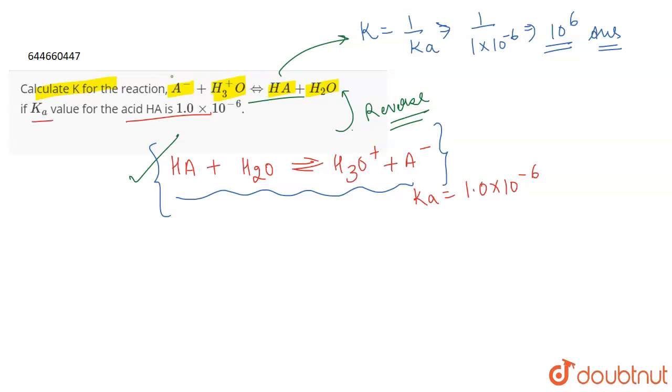Now once you do that, whenever we reverse a reaction, equilibrium constant goes into the reciprocal and that's what we have done. 10^6 is the correct answer for the question.